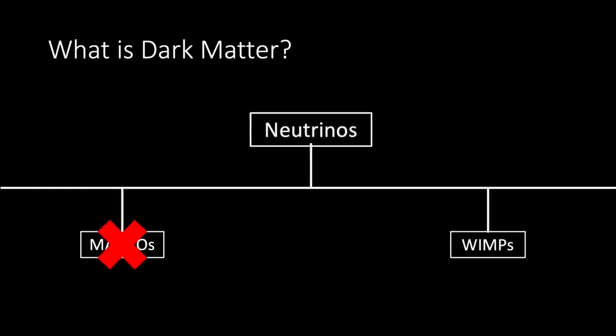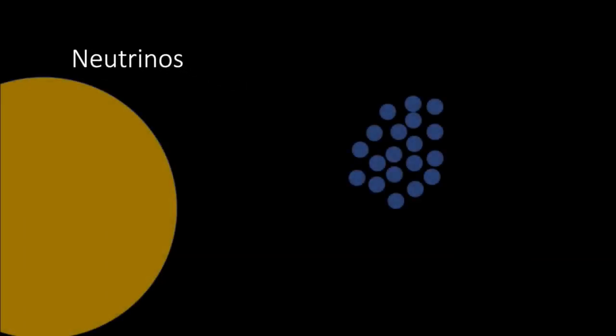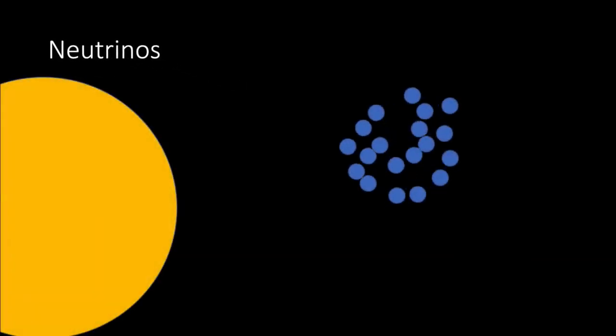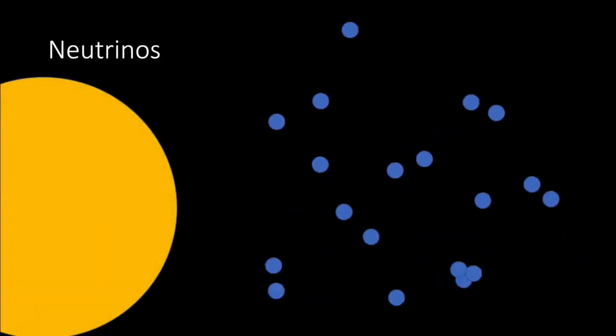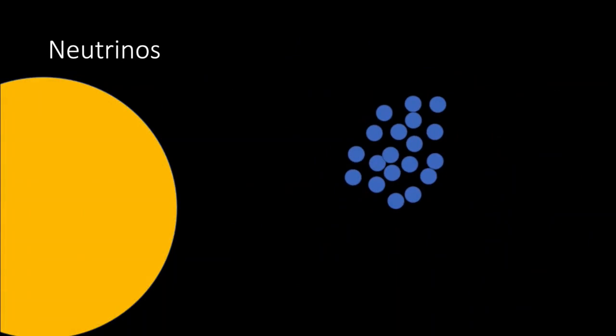Another candidate for dark matter is neutrinos, which are the most abundant particles in the universe formed from nuclear reactions in stars. They don't produce light and barely interact with other particles, making them a prime candidate.